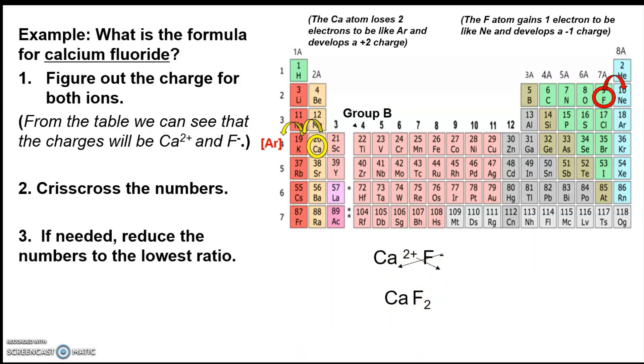Okay, and the last step, which is needed infrequently enough that sometimes people forget to do it, is to reduce the numbers to the lowest ratio if needed. And in this case, we don't need to. The calcium is one and the fluoride is two, so we don't really have to worry about that time. But there are times when you do, so you need to make sure, you know, check on that.